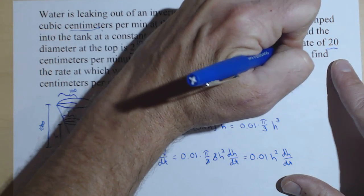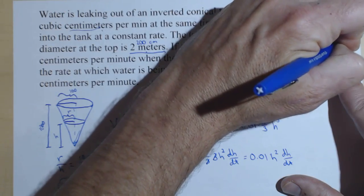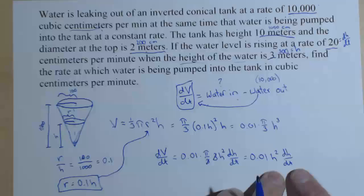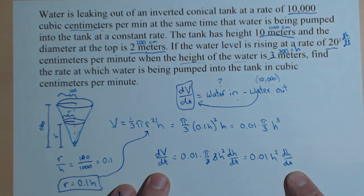So, this 300 here is our h. This 20 is our dh/dt. So, there's our h, our dh/dt. We now have enough to solve for dV/dt.